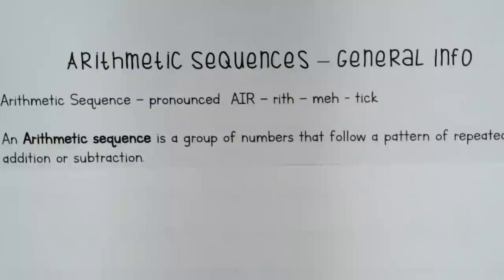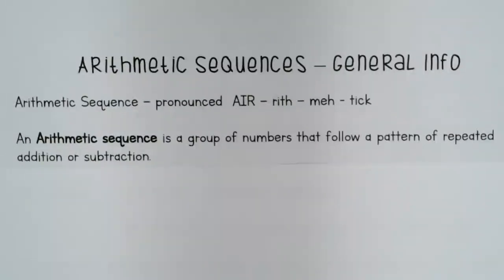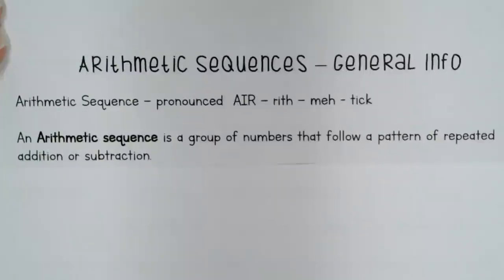An arithmetic sequence is a pattern of repeated addition or subtraction. It is a pattern of numbers where we are adding or subtracting the same number over and over. To get from one term to the next is where the pattern is — so an arithmetic sequence is a group of numbers that follow a pattern of repeated addition or subtraction.